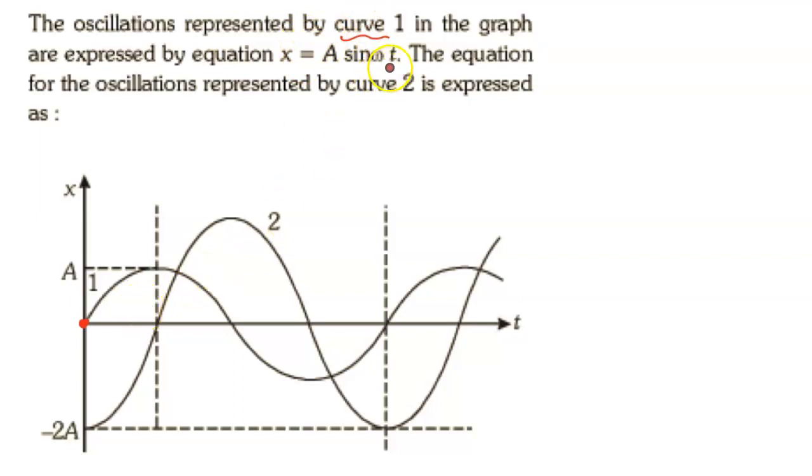If you put t = 0 in the equation of the second curve, the amplitude should be -2A. So you can put and check.